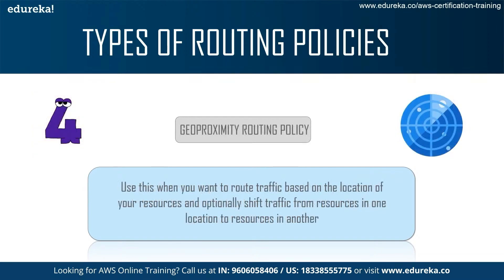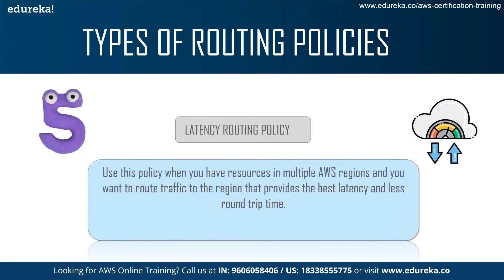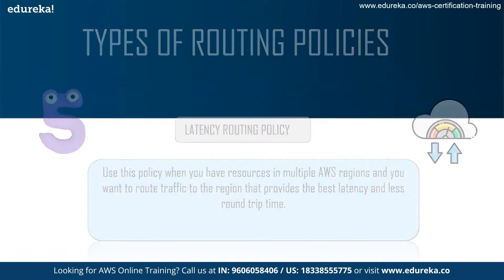Next is the Geoproximity Routing Policy, used when you want to route traffic based on the location of resources. You can optionally shift traffic from one resource to another, or from resources in one location to resources in another location. Finally, we have the Latency Routing Policy, used when you have resources in multiple AWS regions and want to route traffic to the region that provides the best latency and least route time.